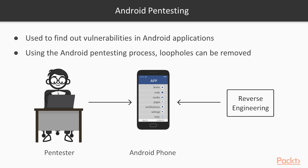We need to check what the vulnerabilities are in the Android application on your mobile phone. The Open Web Application Security Project (OWASP) has also provided a list of vulnerabilities inside applications, so we can follow that and find out the vulnerabilities or weaknesses in the application using the Android pen testing process.